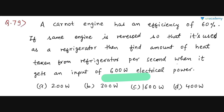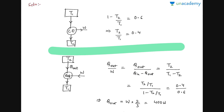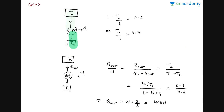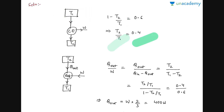The refrigerator's job is to extract heat from inside using electricity. Let the source be at temperature T1 and the sink at T2. The efficiency of a Carnot engine is η = 1 − T2/T1 = 0.6, so T2/T1 = 0.4.